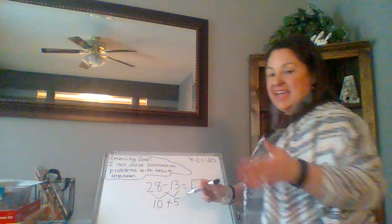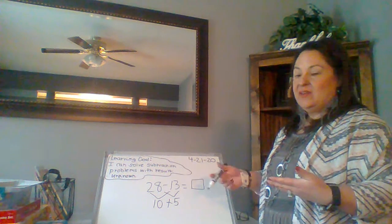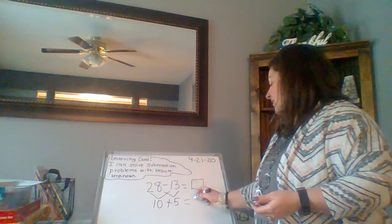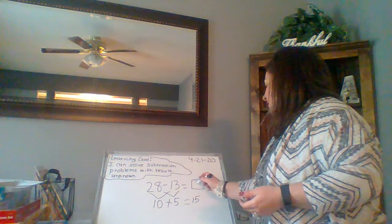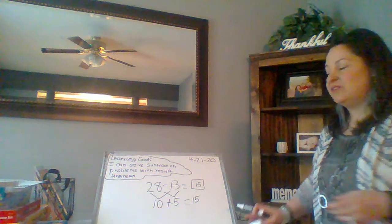Now I need to put my 10s and my 1s back together to get that final answer. So what is 10 plus 5? It is 15. So 28 take away 13 equals 15.